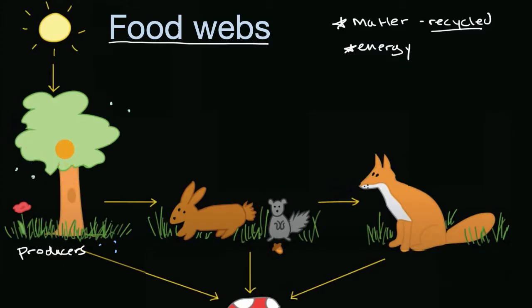And right over here, we have several producers depicted. We have this tree here, which is able to do photosynthesis. We have the grass here that's able to do photosynthesis. And it's not just plants, you have things like algae, and other microorganisms that are able to be producers.